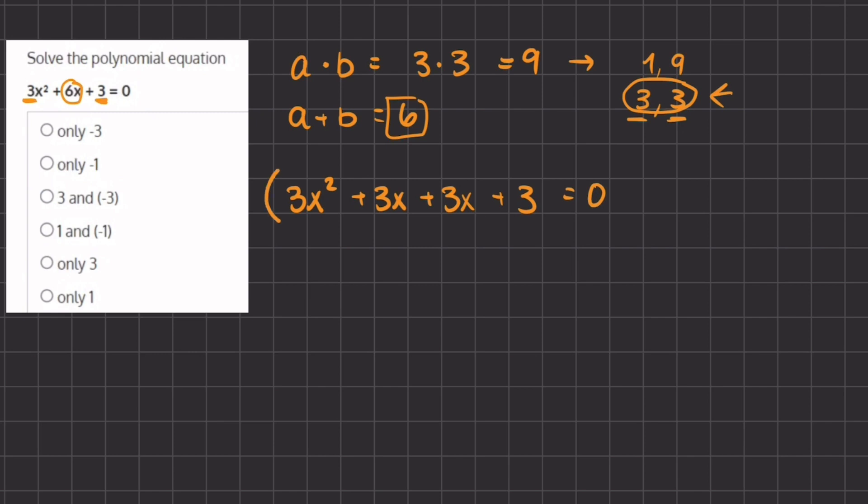Now we are going to group these two terms and factor out the common factor. When we take a look at our first parentheses we can factor out a 3x and what we're left with is x plus 1. When we take a look at our second parentheses, a common factor that we can take out is a 3 and we are left with also x plus 1 equals 0.